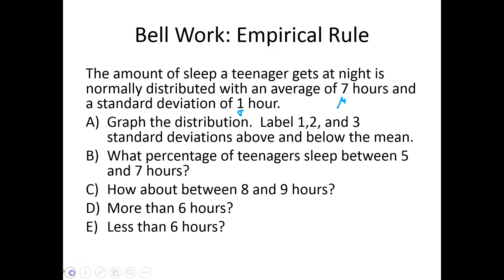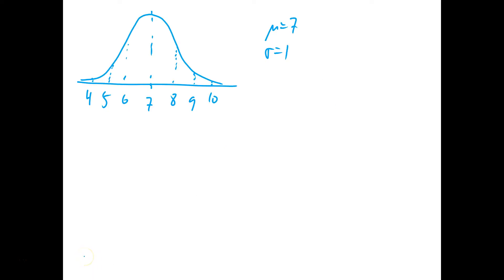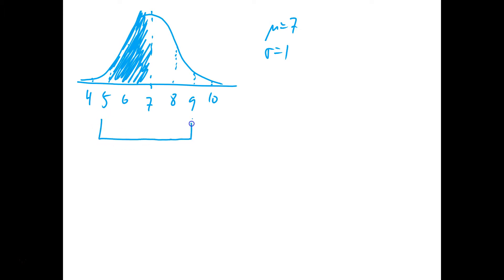They want to know what percentage of teenagers sleep between 5 and 7 hours. So 5 to 7 is this area right here. From our empirical rule, we know that between 5 and 9 — 2 standard deviations below and 2 above — is 95%. It looks like we want half of that area, so half of 95 is 47.5% sleeping between 5 and 7.